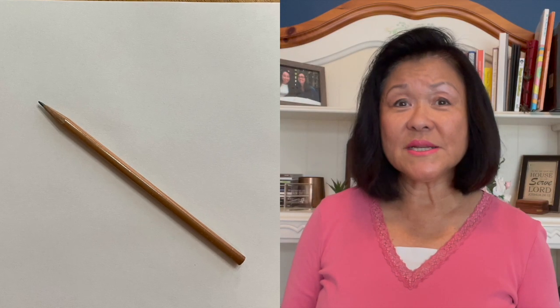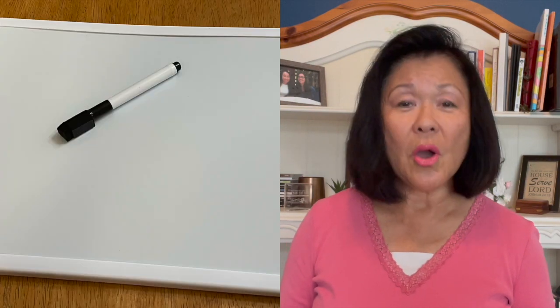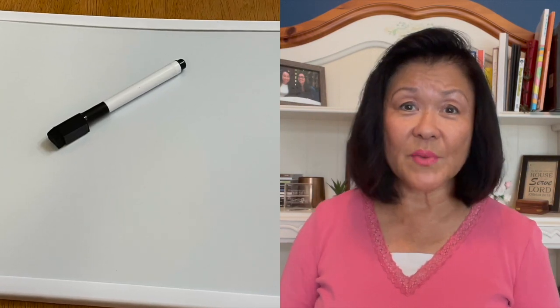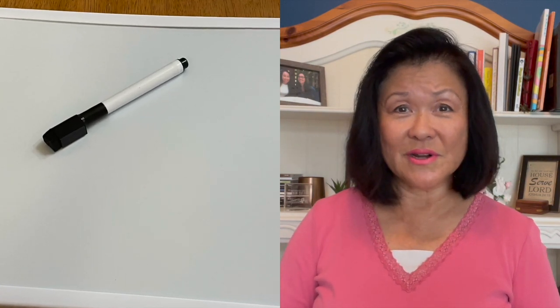Now get a piece of paper and a pencil, or a whiteboard and a dry erase marker. We're going to draw the letter N together. All right, now you're ready to draw the letter N.